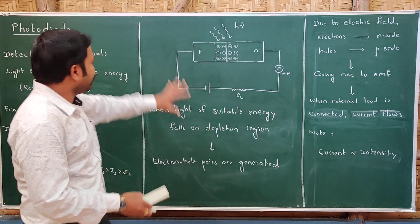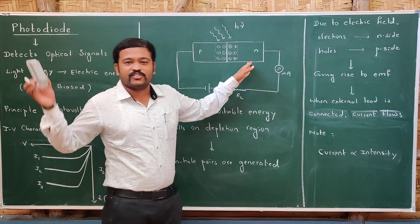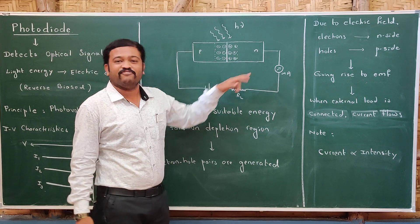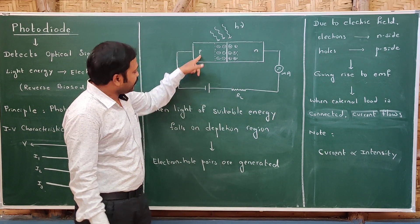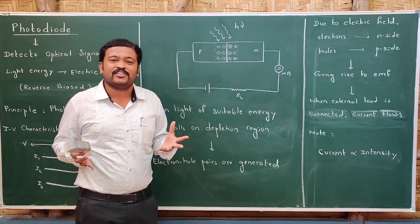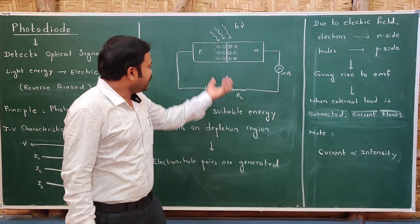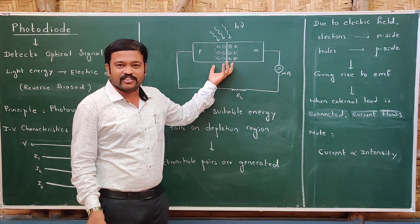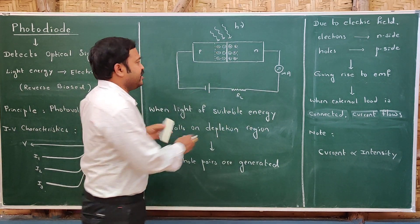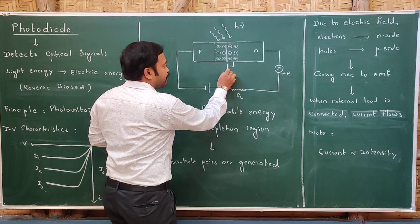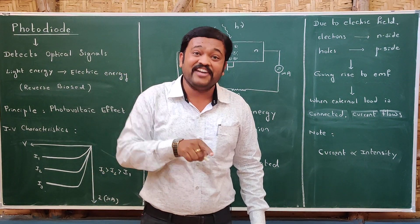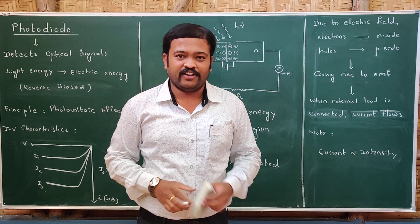In the photodiode, there is a PN junction which is reverse biased — P is connected to negative and N is connected to positive. When a diode is reverse biased, there is a depletion region whose length increases and an electric field is created. There is a positive and negative end, and the movement of charges in reverse bias is due to this electric field.